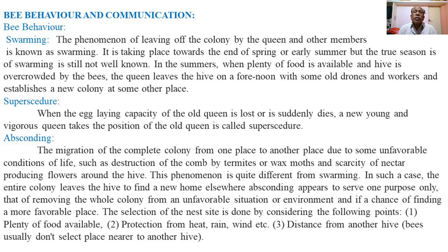The first type of behavior is called swarming. Swarming is the collective migration of the colony — the movement of most members of the colony, including the queen, workers, and drones, away from the hive to another place. It takes place towards the end of spring or early summer, though the true season of swarming is still not well known.